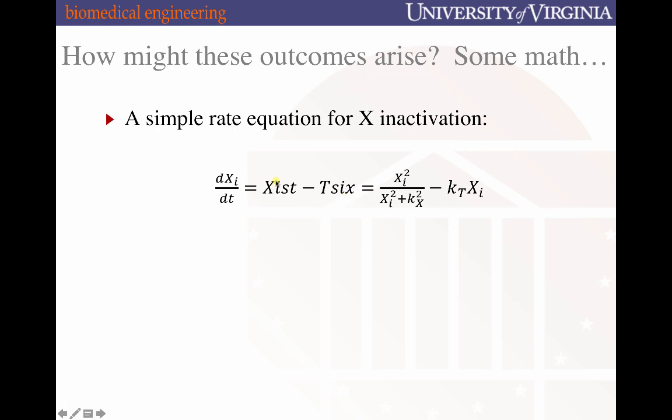If Xist is being made faster than Tsix, then an X chromosome will move toward the Xi state, positive rate of change per unit time. And the bigger the discrepancy between Xist and Tsix, the faster that transition to the Xi state will occur. From here, we need to specify how the long non-coding RNAs are made with respect to the state of Xi.